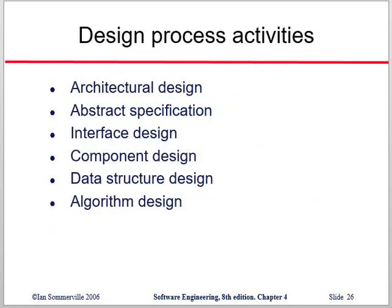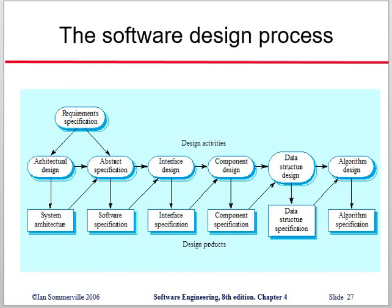In the designing process we have activities such as architectural design, abstract design, interface design, component design, data structure, and algorithm design. The software designing process diagram is given below — you can take a snap of this one.